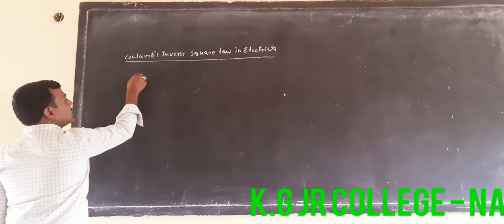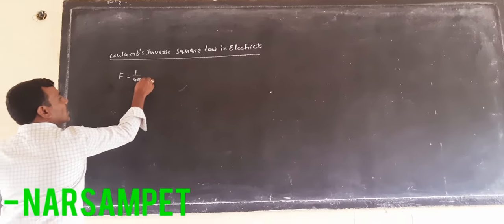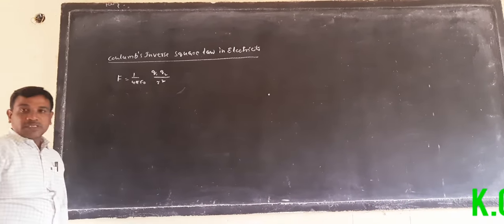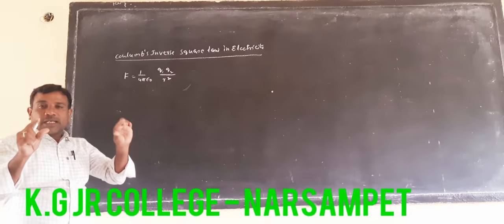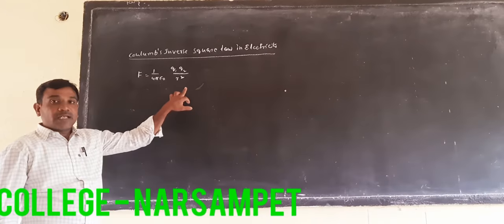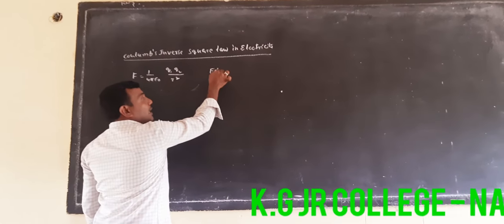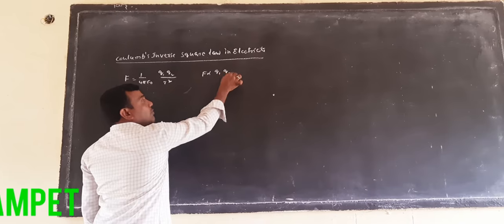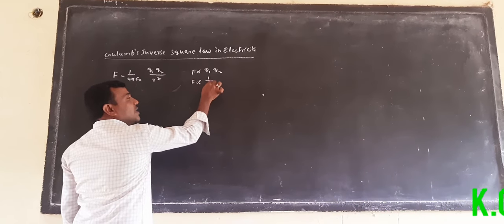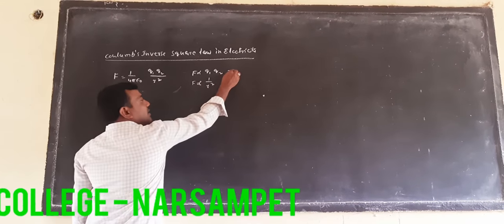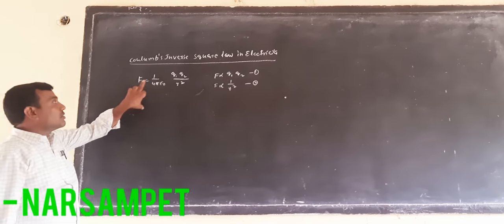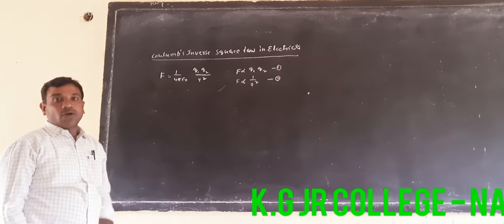Now, what is the formula? F is equal to 1 by 4π epsilon naught, Q1 Q2 by R squared. This is the formula from the statement of Coulomb's inverse square law.